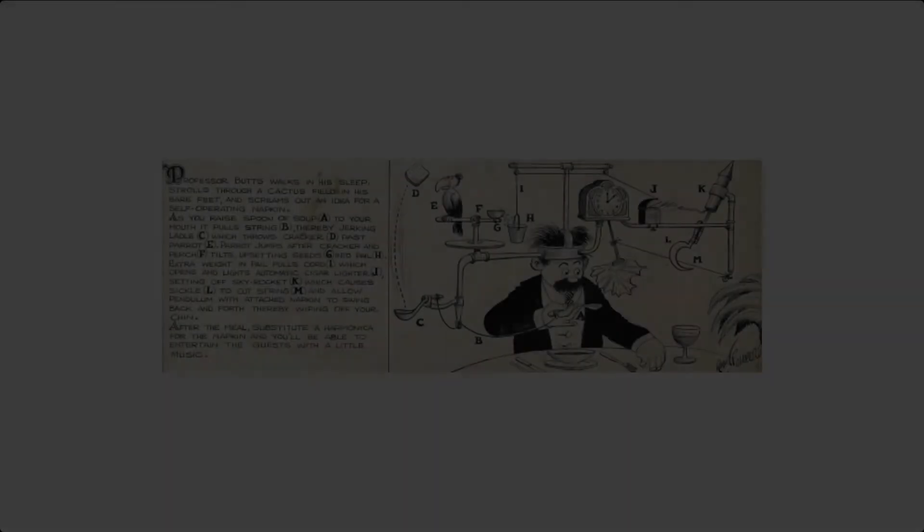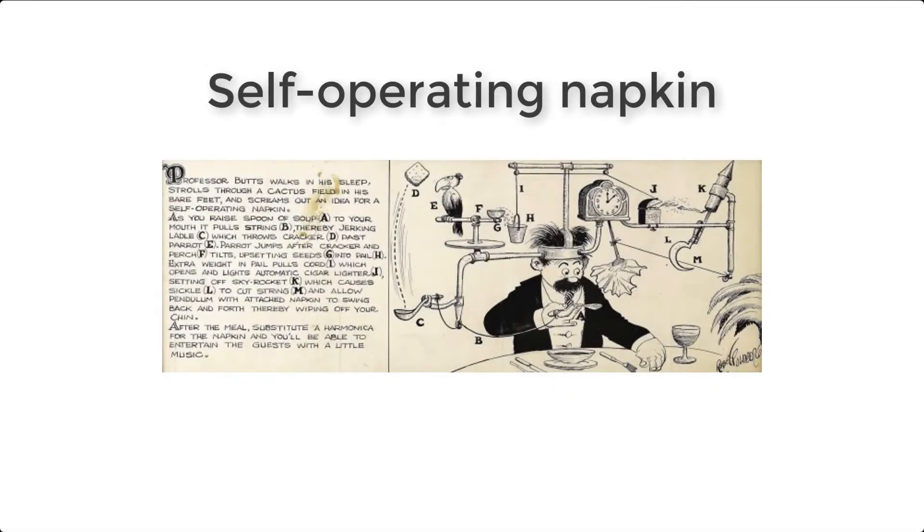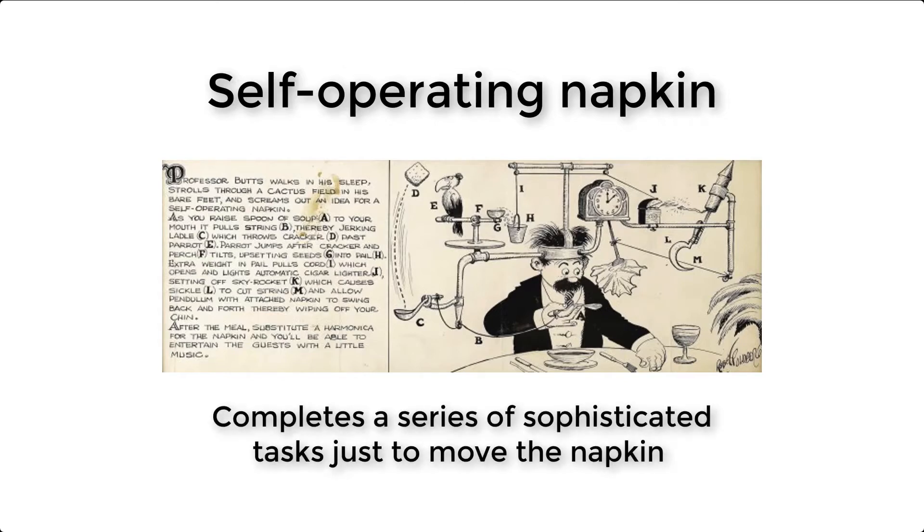So in the case of the self-activated napkin drawn by Rube-Goldberg, we would simply discard all the mechanisms behind if we had not seen them first-hand operating. And we would rather favor simpler models as possible explanations, for example, that the person itself or something else is operating the napkin and not an overly complicated machine.